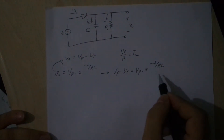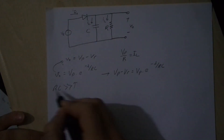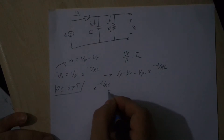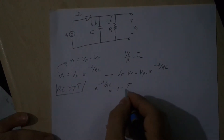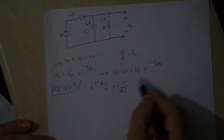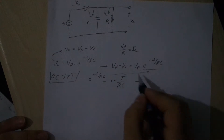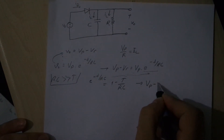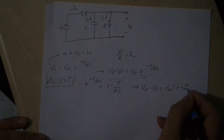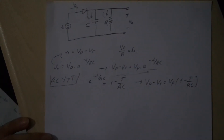We have an assumption here: RC value is much much greater than T. So e to the minus T over RC, we can write as 1 minus T over RC. We put this into the equation.